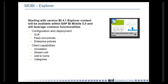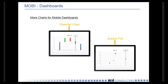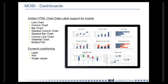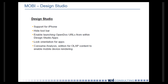Also in Dashboard, more charts have been rendered to the HTML5-compliant standard, including waterfall charts and bubble plot charts. You can now add HTML chart data labels for all the charts you see here, everything from a line chart to a bubble plot. You can also do dynamic positioning within the device itself for labels, charts, and single values.